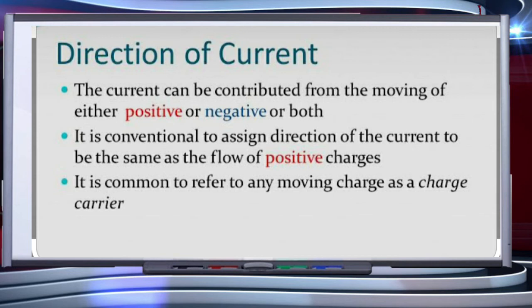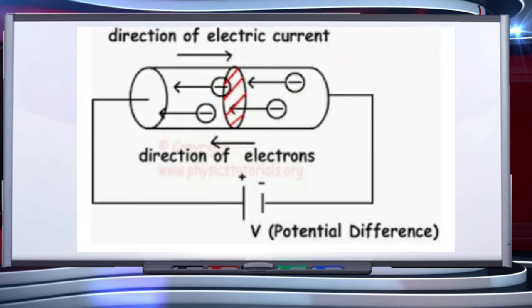Electrons carry negative charges. As we have already seen the direction of conventional current is taken to be opposite to the direction of flow of electrons. So, the direction of flow of electric current is the direction of flow of positive charge or opposite to the direction of flow of negative charge that is electrons.